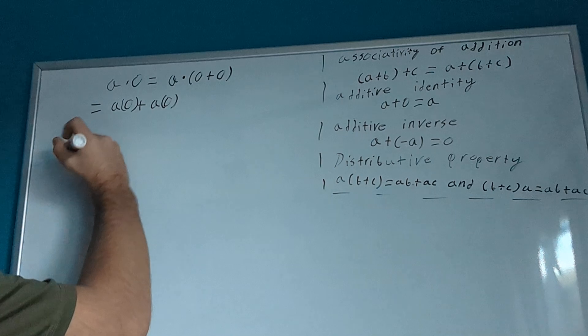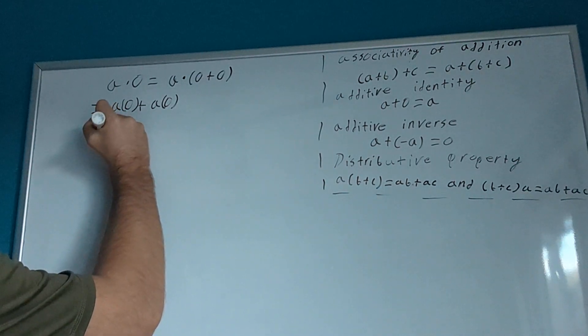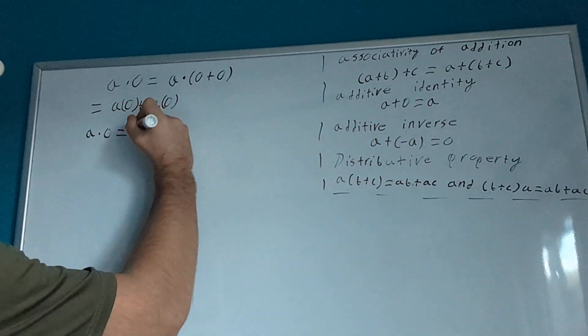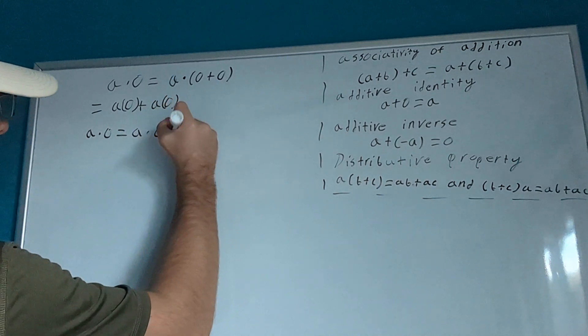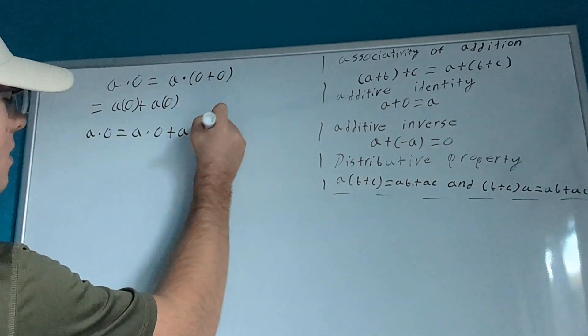So, let's recap what we have. We have a times 0 equals a times 0 plus a times 0.